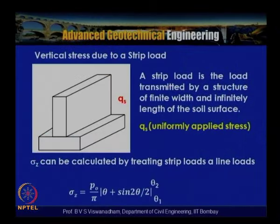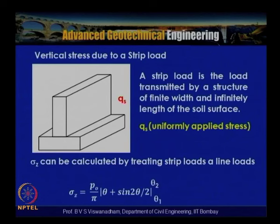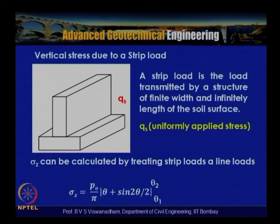We introduced in the previous lecture Boussinesq theory and Westergaard theory. From Boussinesq theory, a number of deductions can be made. We discussed the vertical stress due to strip load — if you have a strip foundation connected to a wall with a continuous foundation running over length L, the strip load is the load transmitted by a structure of finite width and infinitely long surface length along the soil surface. Sigma_z can be calculated by treating strip loads as line loads.